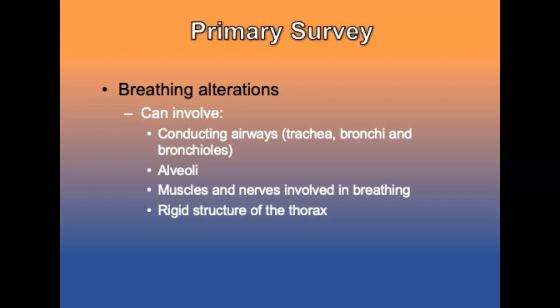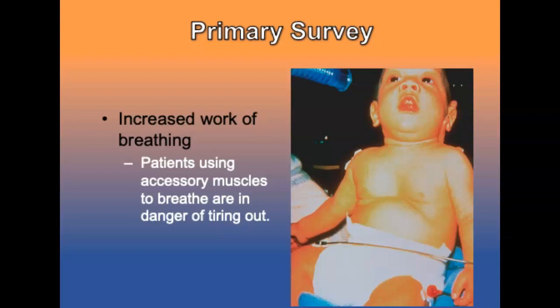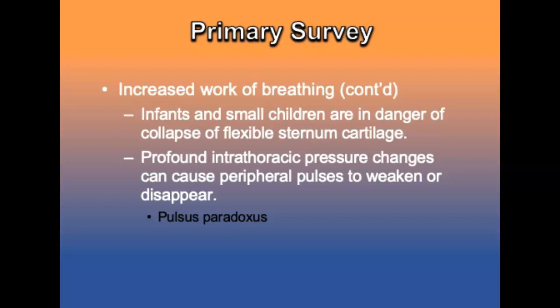Assess breathing alterations, which can involve the conducting airways, alveoli, muscles and nerves involved in breathing, or the rigid structures of the thorax. Patients using accessory muscles to breathe are in danger of tiring out — using abdominal muscles to push air out and chest and neck muscles to pull air in. When infants and small children use accessory muscles, the flexible sternum cartilage often collapses, leaving bony retractions. Profound intrathoracic pressure changes can cause peripheral pulses to weaken or disappear during inspiration.